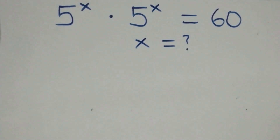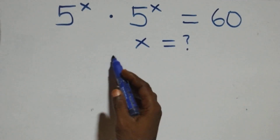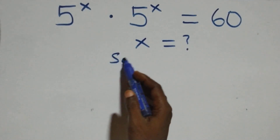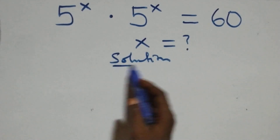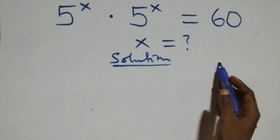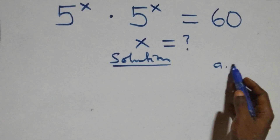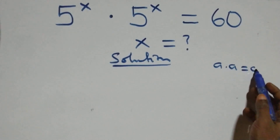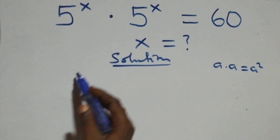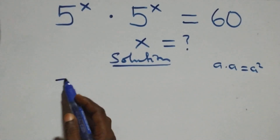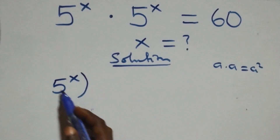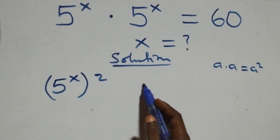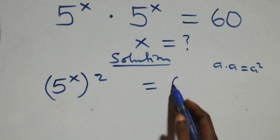Hello, you are welcome. How to solve this nice exponential equation. What we have here follows when we have a times a, which is the same thing as a squared. We write this as five raised to the power x, squared, which equals sixty.